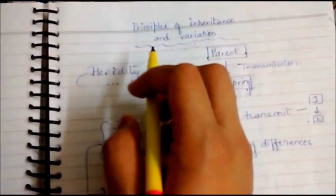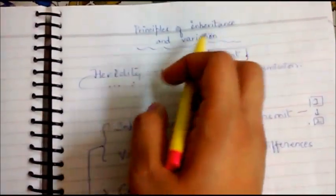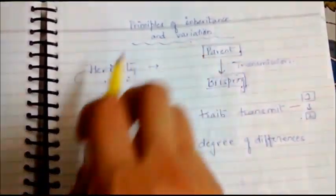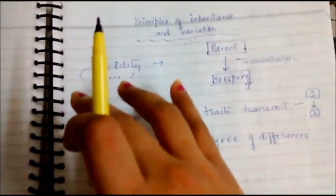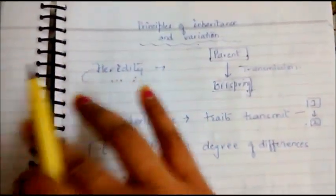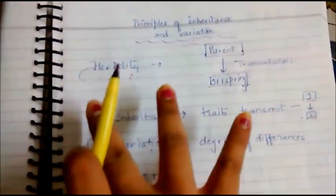Today we will be studying about the Principles of Inheritance and Variation chapter, where we will study about the basics of heredity, monohybrid cross, and dihybrid cross.